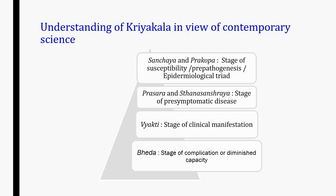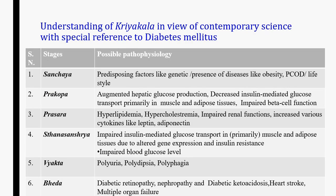Kriya Kaal can be understood in view of contemporary science. Sanchay and Prakop may be considered as the stage of susceptibility, pre-pathogenesis, and the epidemiological triad. Prasar and Sthan Sanchray may be considered as the stage of pre-symptomatic disease. Vyakti may be considered as the stage of clinical manifestation. Bhed is the stage of complication or diminished capacity. In case of diabetes mellitus, predisposing factors like genetic presence and diseases like obesity and PCOD may be considered under Sanchay. Augmented hepatic glucose production, decreased insulin-mediated glucose transport, and impaired beta cell function may be considered under Prakop stage.